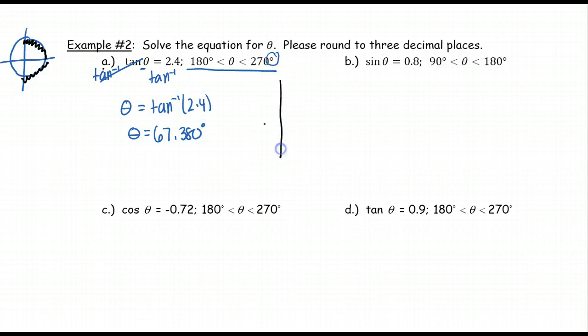But the problem says that our angle is between 180 and 270. Well, 67 is in the first quadrant. 67.380 degrees. But 180 is here and 270 is here. So that means we need an angle, the same angle or same reference angle, in the third quadrant.